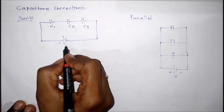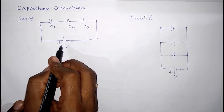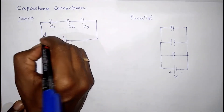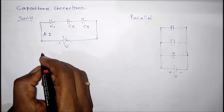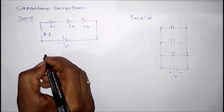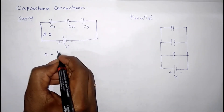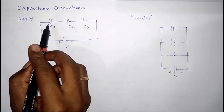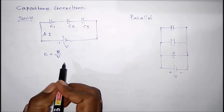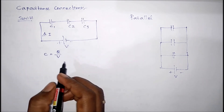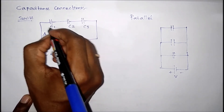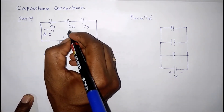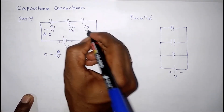In a series combination we have capacitors C1, C2, and C3 with an applied voltage. In a series combination the current is the same throughout, so the current is i. We know capacitance C equals Q divided by V. Since current is the same, the charge across each capacitor is also the same. However, the voltages across the capacitors are different.